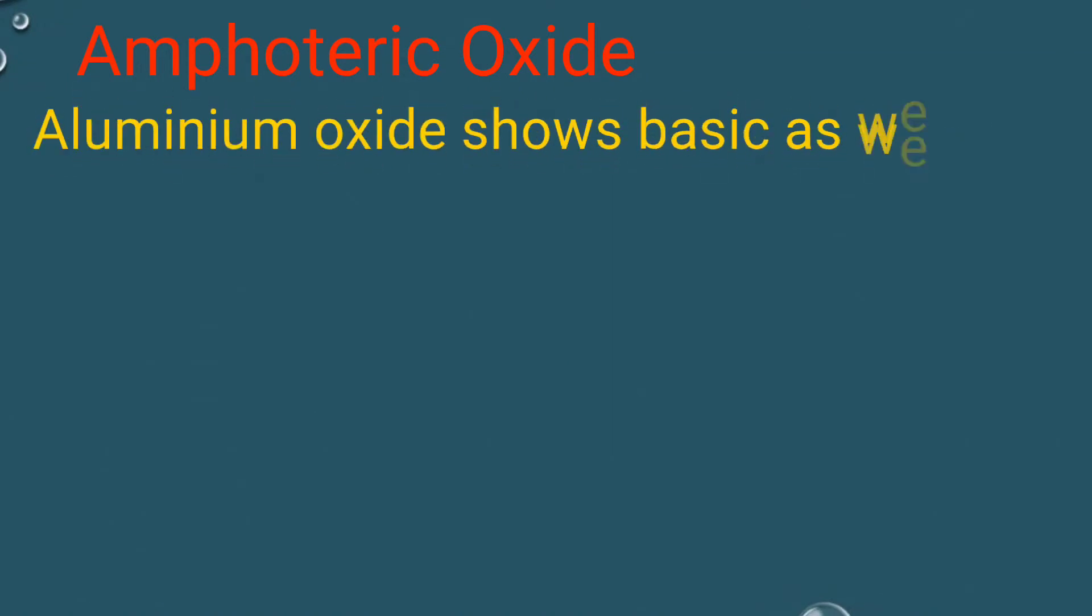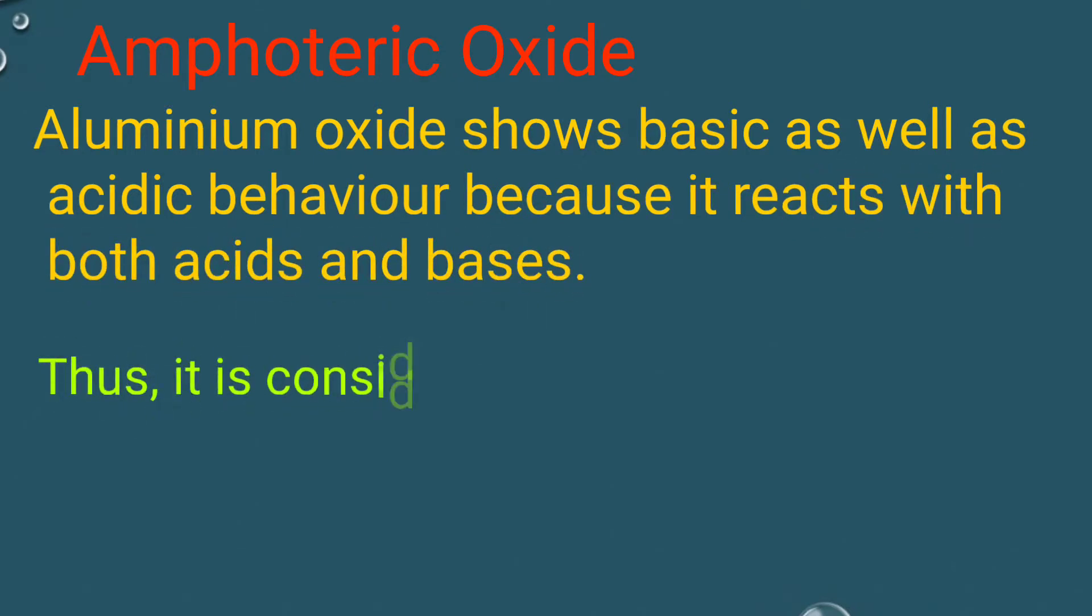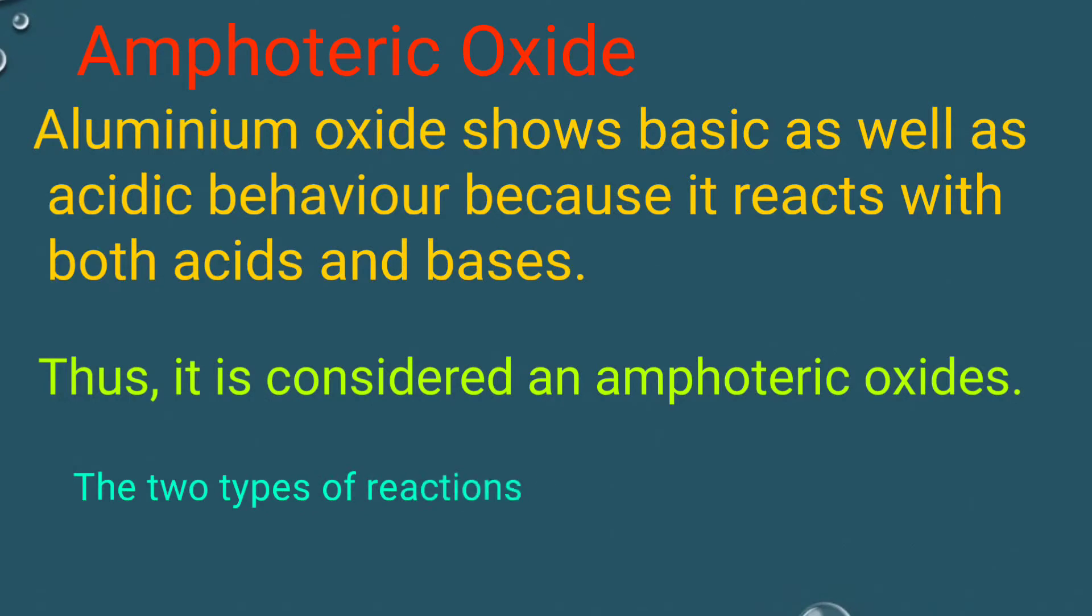For example, aluminium oxide shows basic as well as acidic behaviour because it reacts with both acid and base. Thus, it is considered an amphoteric oxide. The two types of reactions of aluminium oxide are as follows.